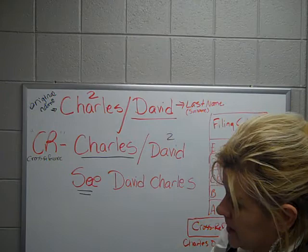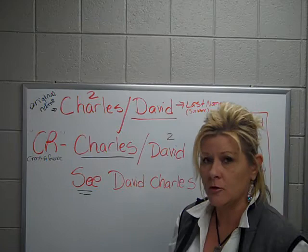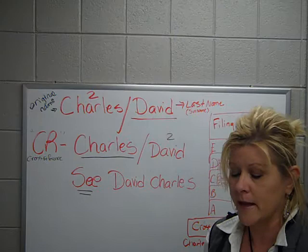Go over to page 46. This talks about the different types of personal names that need to be cross-referenced. We're going to cover unusual names, hyphenated, alternate, and similar names. And then there are a couple of business name types: compound, abbreviations, and acronyms.